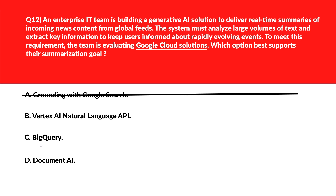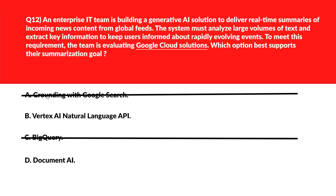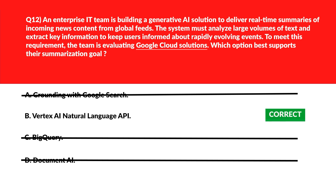We'll move to C. C says BigQuery. BigQuery is a large-scale data warehouse for analytical SQL queries, not for generative NLP tasks like summarization — wrong answer. Let's move to option D. D says Document AI. Document AI is optimized for parsing and extracting data from structured documents, not for summarizing unstructured editorial content — wrong choice. We'll lock option B, Vortex AI natural language API, as the right answer.